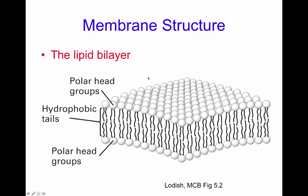Looking more closely at membrane structure, the membrane is composed of phospholipids. These molecules are amphipathic — they contain a polar head group which is hydrophilic, and a pair of tails which are hydrophobic. The membrane lipid bilayer has one sheet exposed to the aqueous solution full of polar heads, and the hydrophobic tails of one layer face each other. Therefore, hydrophobic molecules always interact with hydrophobic molecules, and the polar heads interact with each other on their respective sides.